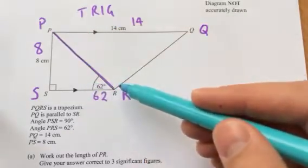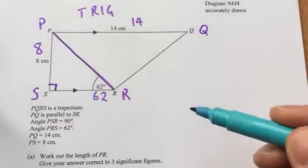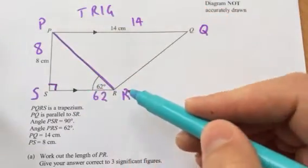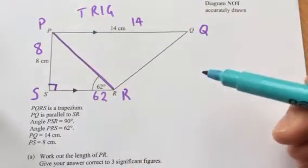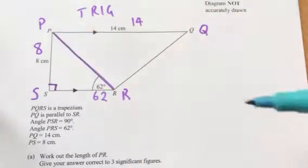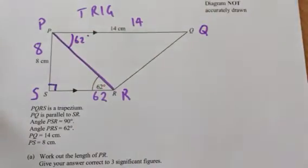Angle PSR is 90 degrees, denoted by that square. Angle PRS is 62. PQ is 14 and PS is 8. Now, because it's parallel lines, we know that that's also going to be 62. We'll use that in a second.